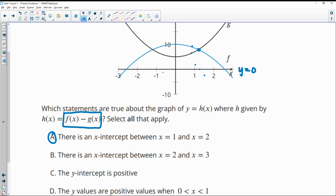B, there's an x-intercept between two and three. So here's two, here's three. And in this case, through this whole interval, our f function is lower than g. So when we do f minus g here, it's going to be less than zero the whole time. So it's never going to cross back over the x-axis. So there would not be an x-intercept there.